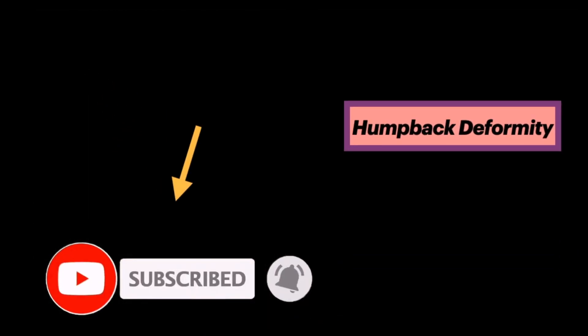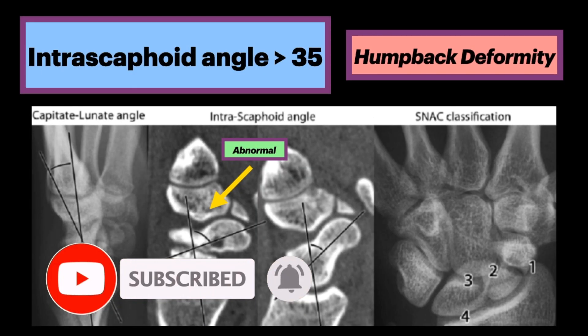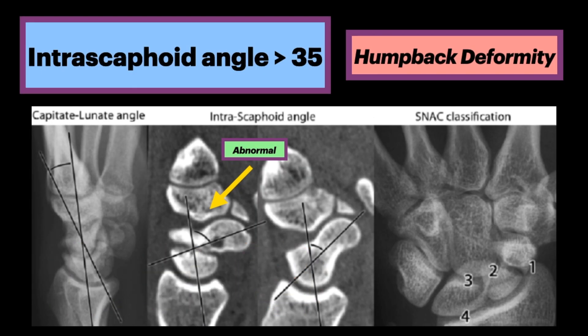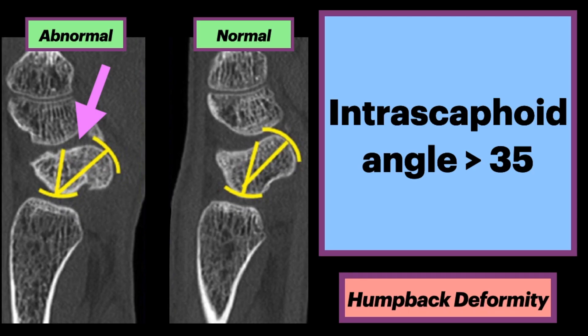What is a humpback deformity? This is when the intrascaphoid angle is greater than 35 degrees. This would require an open wedge interposition graft to restore the normal anatomic position of the scaphoid in relation to the carpal bones. The abnormal scaphoid on the left shows a humpback deformity. Here is a sagittal CT highlighting an increased intrascaphoid angle greater than 35 degrees.